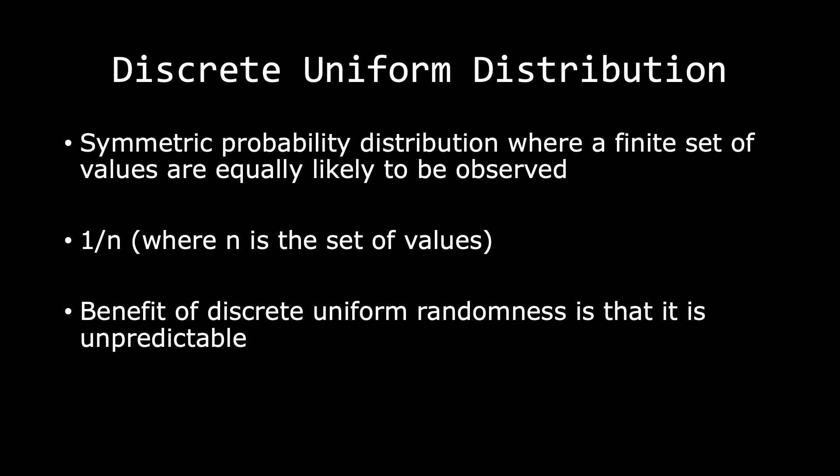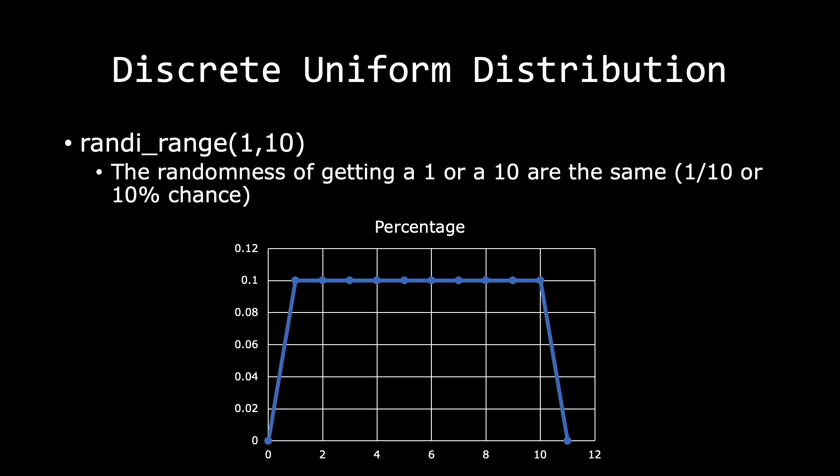First, let's get started with discrete uniform distribution. The discrete uniform distribution is a symmetric probability distribution where a finite set of values are equally likely to be observed. Basically, this is your typical ratio of one divided by N, where N is the set of values. The benefit of using discrete uniform randomness is that it is unpredictable. The game engine does provide us a discrete uniform distribution — for example, the random integer range function.